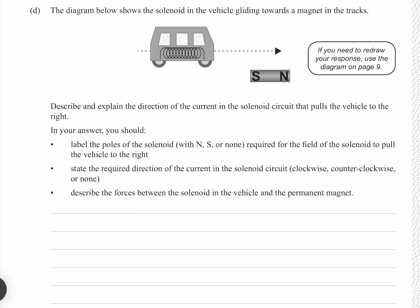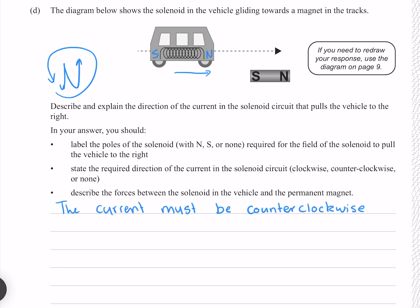The diagram below shows the solenoid in the vehicle gliding towards a magnet in the tracks. Describe and explain the direction of the current in the solenoid circuit that pulls the vehicle to the right, labelling the poles of the solenoid. Since there is a south pole in the track, for there to be an attraction the solenoid must have a north pole facing it, making its other side a south pole. By Lenz's law, for a north pole to form, the current must flow in a counterclockwise direction. The forces between the solenoid and the permanent magnet must therefore be attractive.